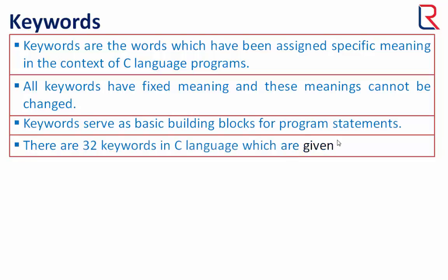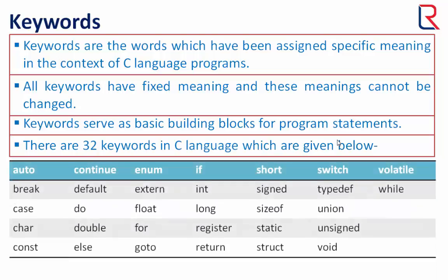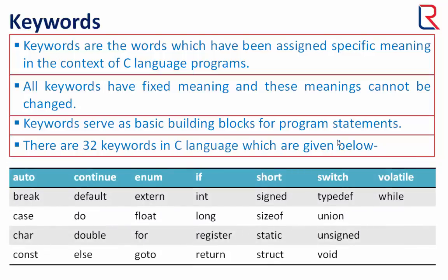There are 32 keywords in C language which are given below. Use of these keywords we will see later in videos.